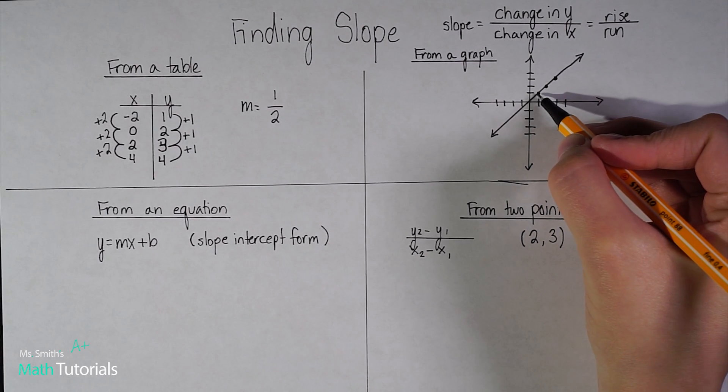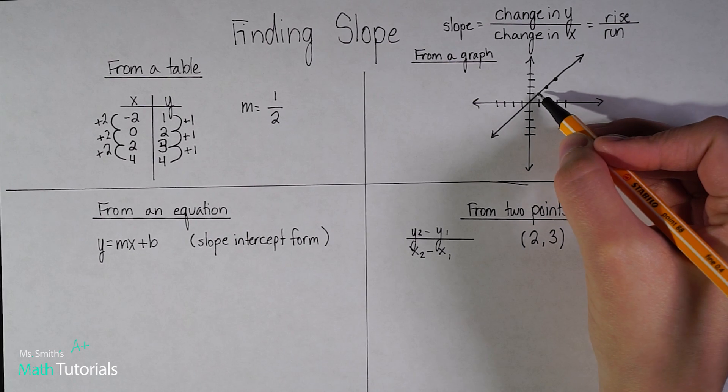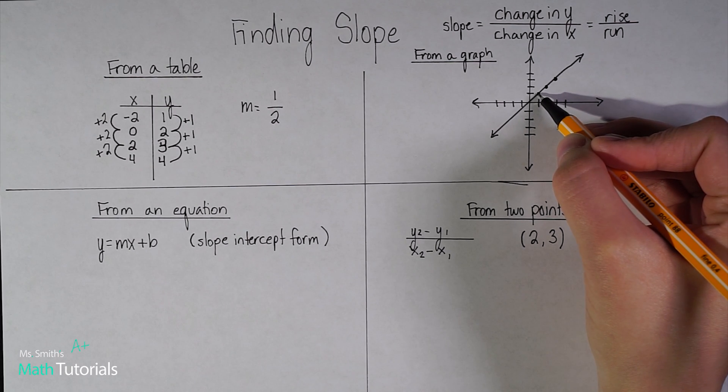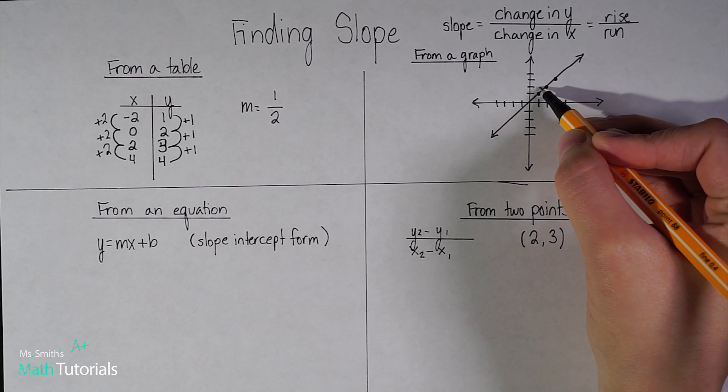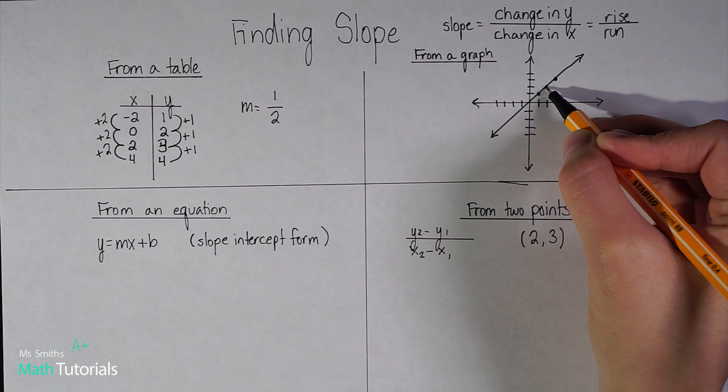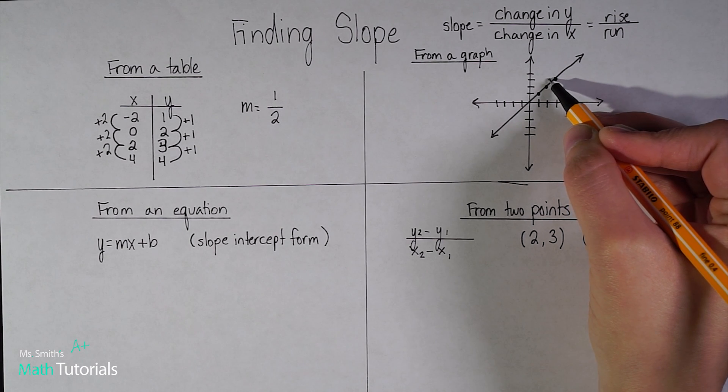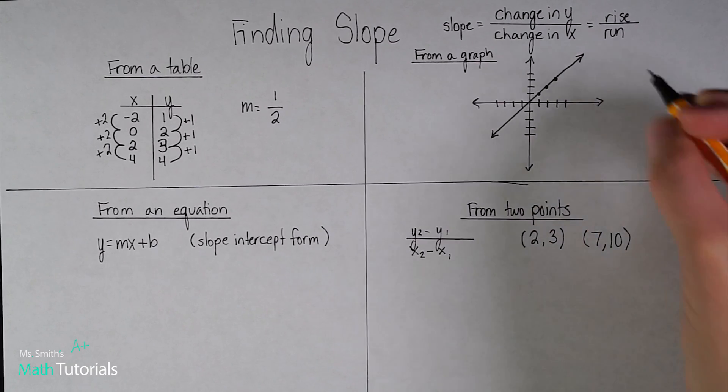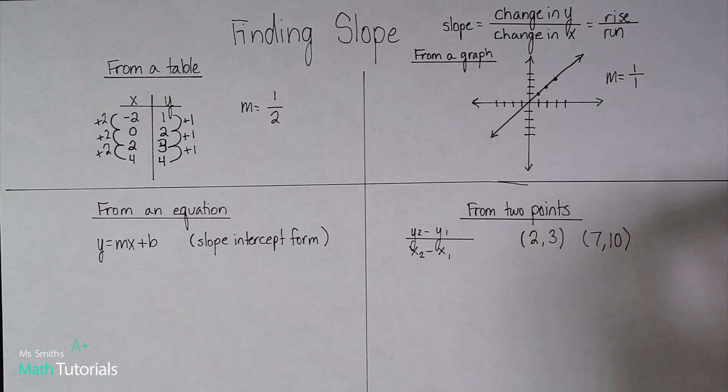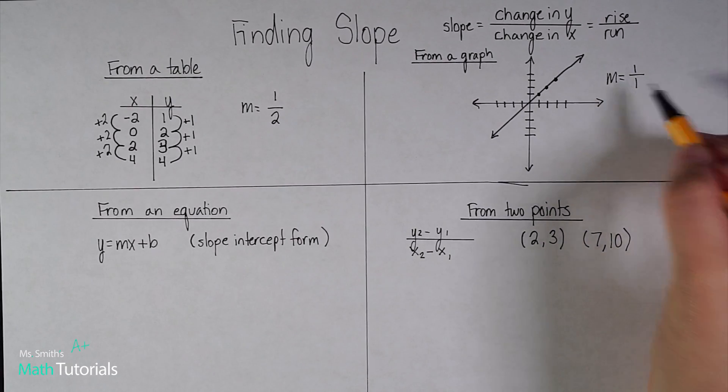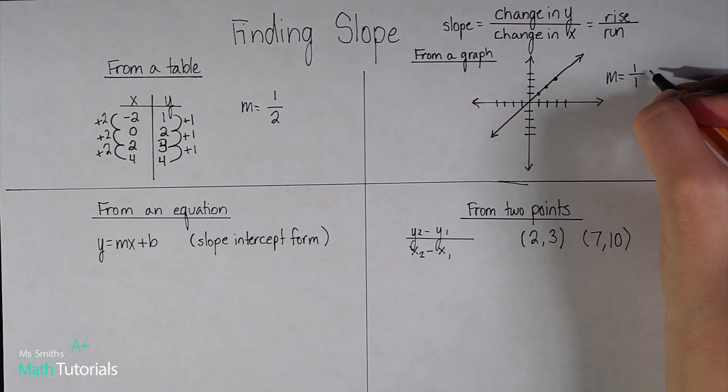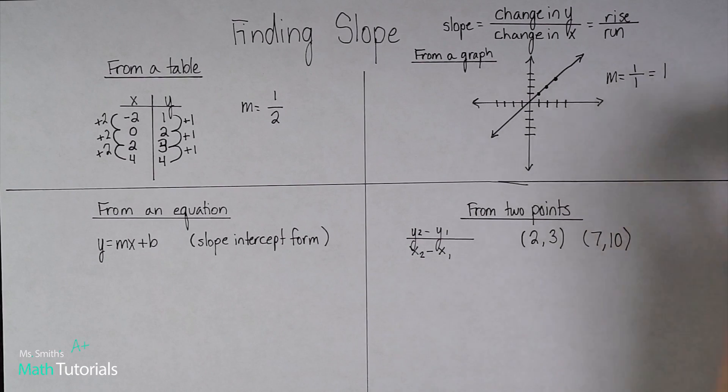So we would just want to make sure, you know, we're using reasonable judgment. So here I'm rising 1 and I'm moving over 1. To get from this point to the next point, I'm again rising 1 and moving over 1. So in this case, my slope, my m, is 1 over 1. My change in y over my change in x, which we know just reduces to 1.